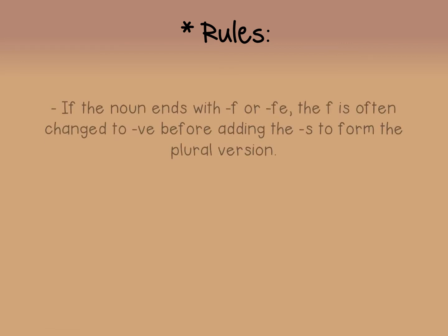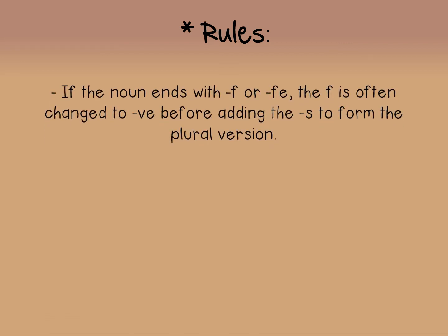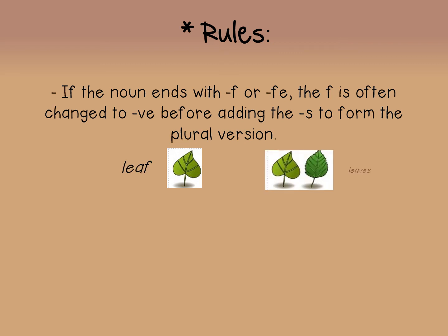The following rule: if the noun ends with an F or FE, the F is often changed to VE before adding the S to form the plural version. For example, 'leaf' changes to 'leaves.'